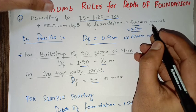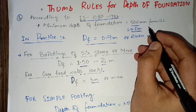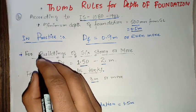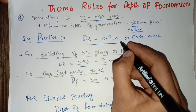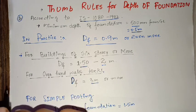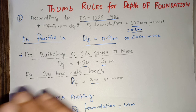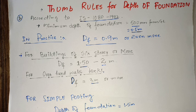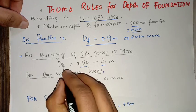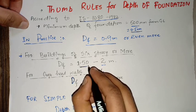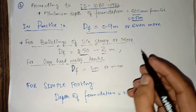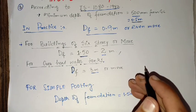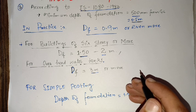The minimum depth is 0.5 meters below the ground level. In practice, we generally provide 0.9 meters as the depth of foundation. For buildings of 6 storeys or more, we have to provide a depth of foundation between 1.5 to 2 meters, depending on the factors mentioned earlier.